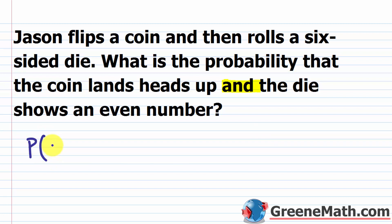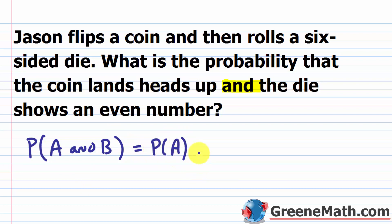The probability of some event A and some event B happening — in this case, the coin landing heads up and the die showing an even number — is equal to the probability of event A happening times the probability of event B happening. This is given the fact that they are independent events, meaning the first event does not impact the result of the second event in any way. If he flips a coin, that does not impact the result of rolling a six-sided die, so these are independent events.